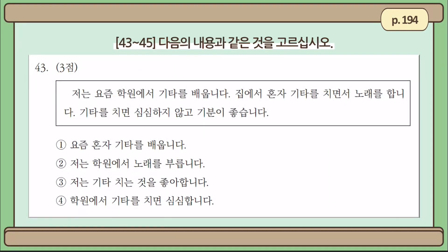The question for numbers 43 to 45 is 다음의 내용과 같은 것을 고르십시오. This time, you need to choose the sentence that does match the given text. As you know well by now, you need to first check the answer choices and figure out what to keep an eye out for in the passage. Let's begin with question number 43.